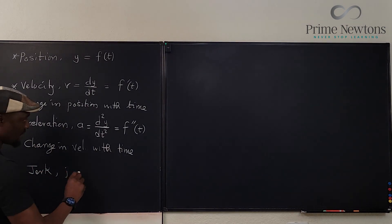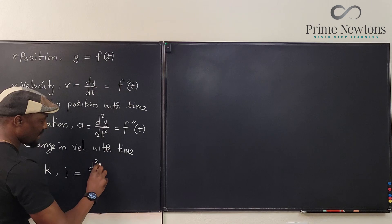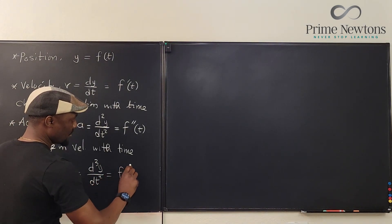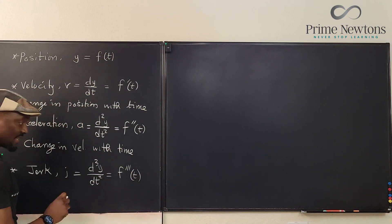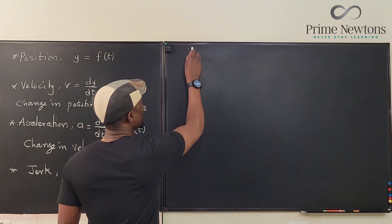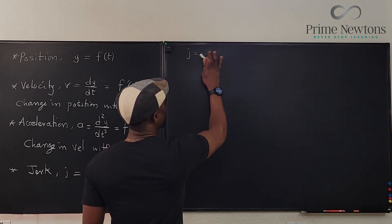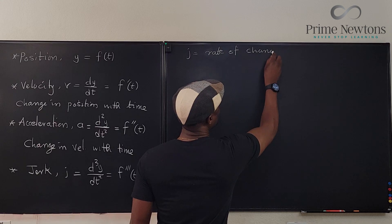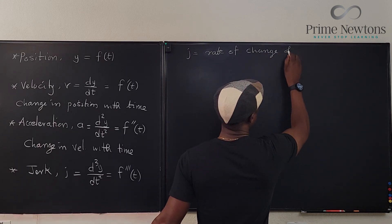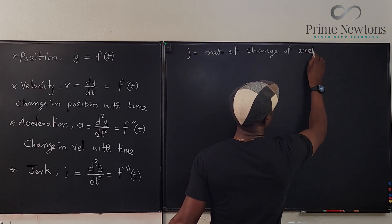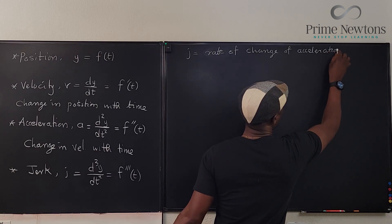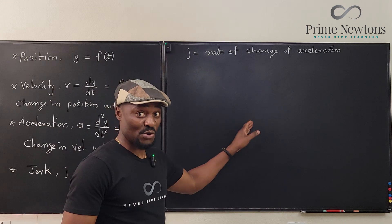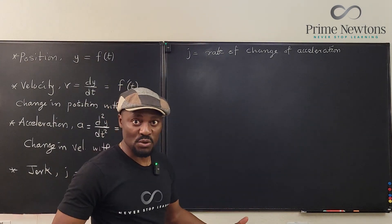The next one is going to be called the jerk. Small letter j. It is d³y/dt³, and it is f triple prime of t. And this is called, so, j is change, or let's call it rate of change of acceleration. And let me just show you a very simple equation to make you understand what the jerk of any object is, or the jerk of any motion.